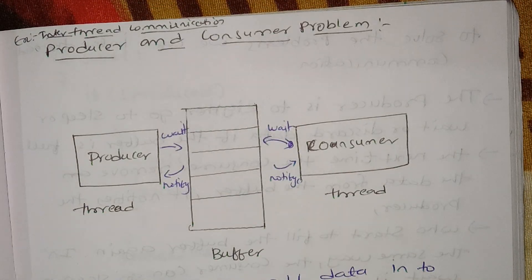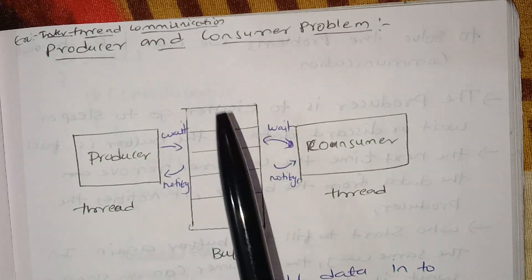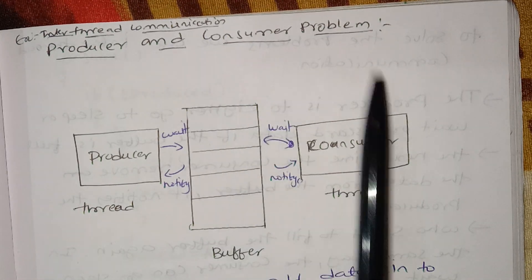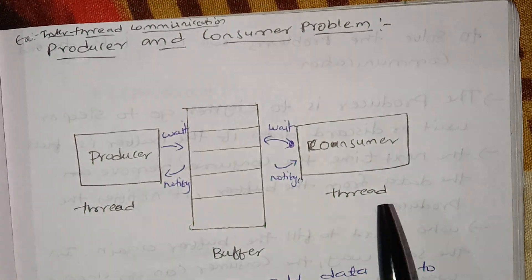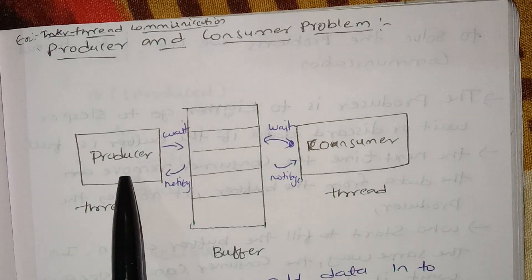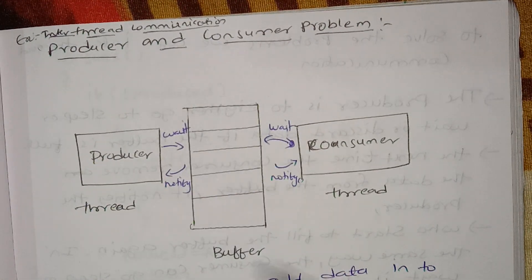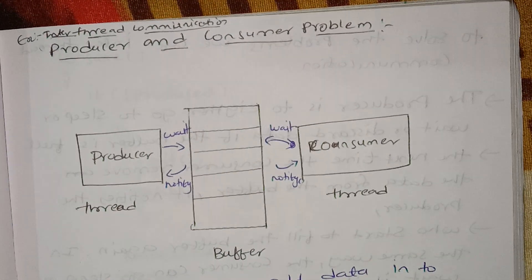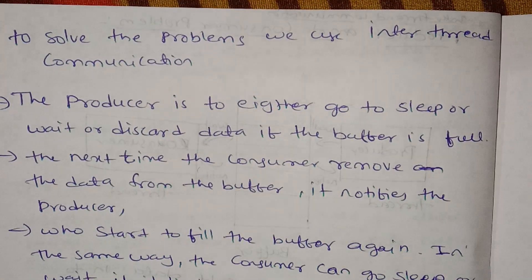At the same time, the consumer is consuming data, removing it from the buffer one piece at a time. To solve this problem, inter-thread communication is used.